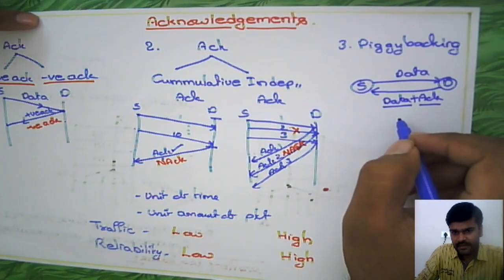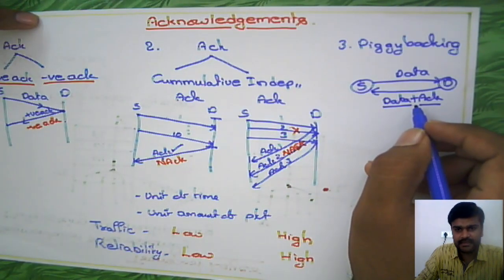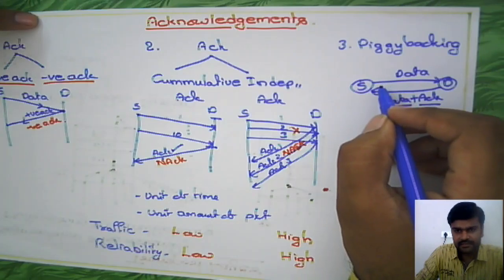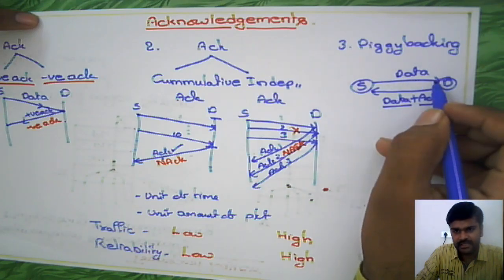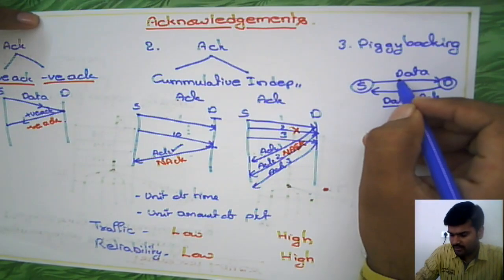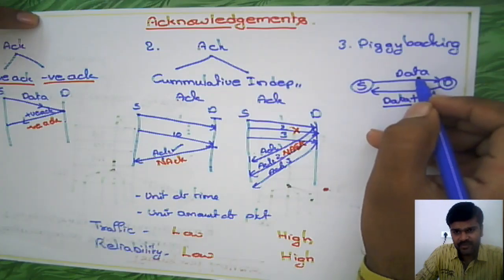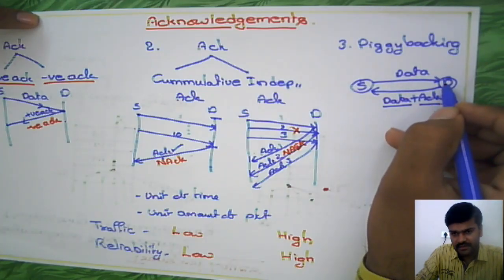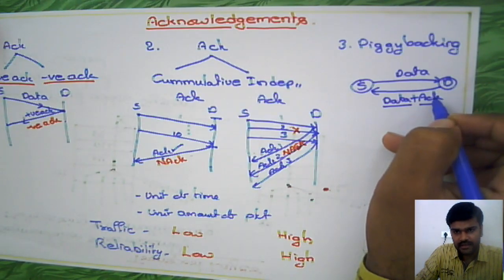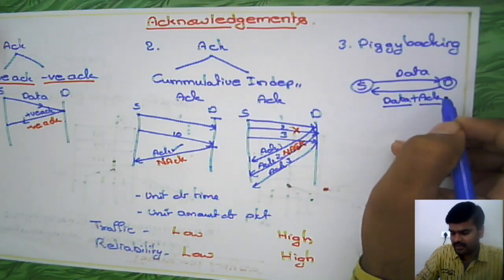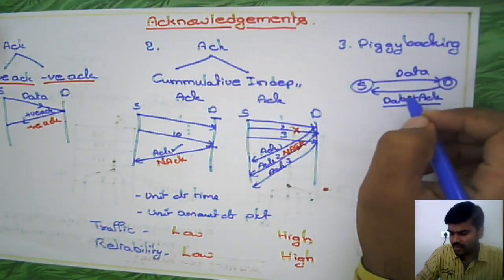This is normally seen in the client-server architecture. The client sends a data packet requesting something, like a web page. The server gives an acknowledgement for that request and along with that acknowledgement, it also sends back the requested data.